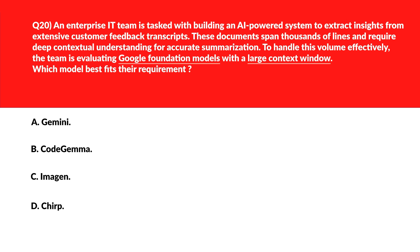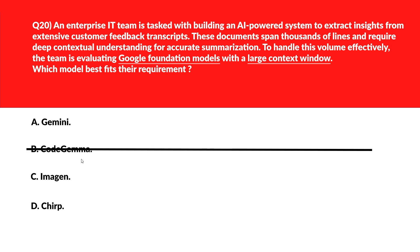Now let's look at this question — this is all about evaluating Google foundation models with large context window. Option A says Gemini. Gemini as a foundation model is designed to process multi-modal inputs with extended token capacity — let's keep it. We'll move to option B. B says Code Gemma. Code Gemma is a model optimized for code generation and developer assistance tasks — so this is incorrect. We'll move to option C. C says Imagine. Imagine as a model is focused on generating high-quality images — if you look, the word 'image' is right there in 'Imagine', so that's what it relates to.